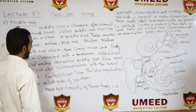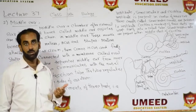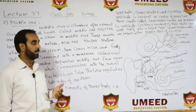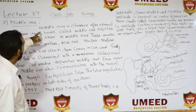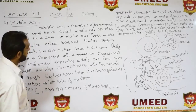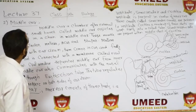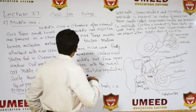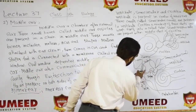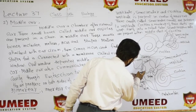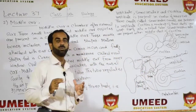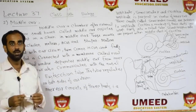Middle ear. As we know, there are three years: outer ear, middle ear, and inner ear. The middle ear is a chamber after the external ear. After the external ear, there are three small bones called middle ear ossicles.